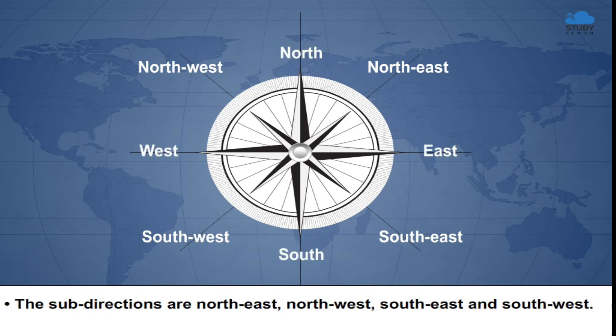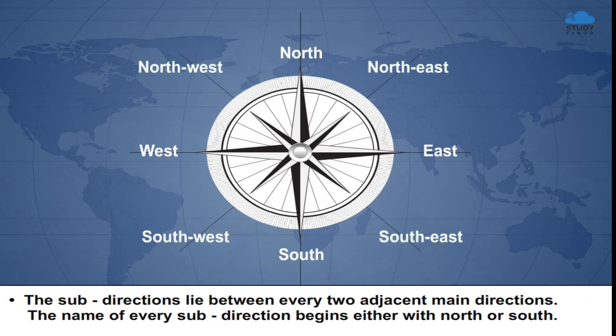The sub-directions are North-East, North-West, South-East, and South-West. The sub-directions lie between every two adjacent main directions.